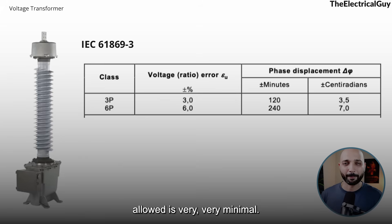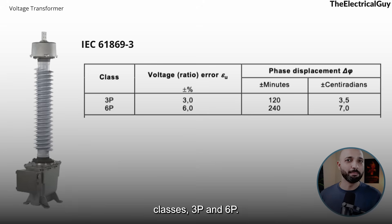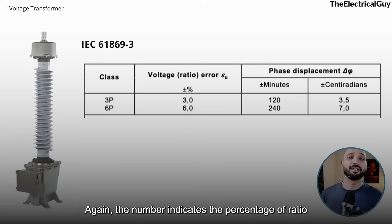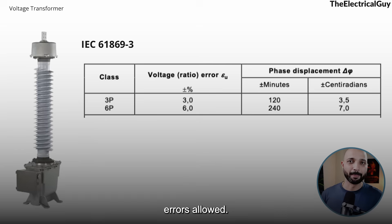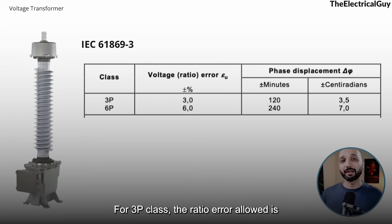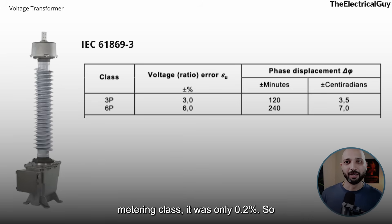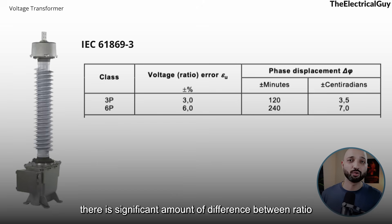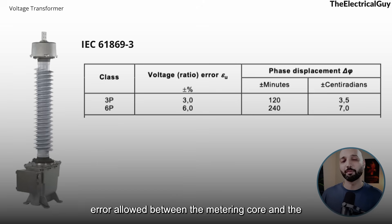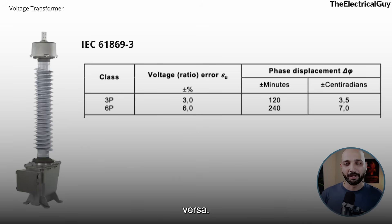Similarly, for protection purposes IEC has defined two classes: 3P and 6P. Again, the number indicates the percentage of ratio error allowed. Here is the example table from IEC — for the 3P class the ratio error allowed is 3%. Compare that with the 0.2 metering class where it was only 0.2%. There is a significant difference in the ratio error allowed between the metering core and the protection core, which is why you should not use a protection core for metering or vice versa. The phase displacement values are also given for the 3P and 6P classes.